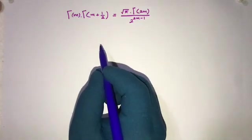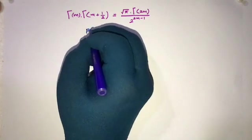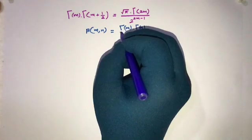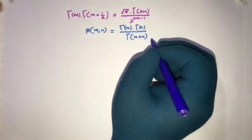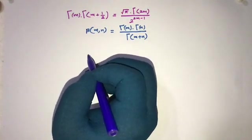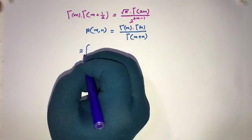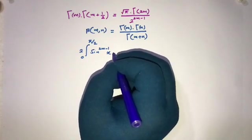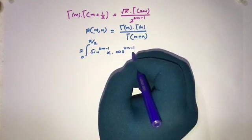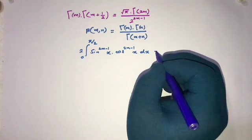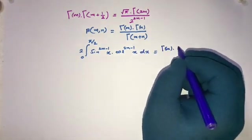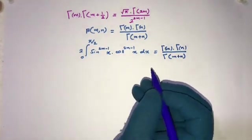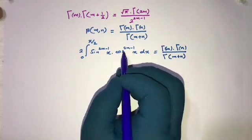First, we know the beta function: beta of m, n is equal to gamma of m times gamma of n over gamma of m plus n. We can also write the beta function using an integral: 2 times the integral from 0 to pi over 2 of sine to the power 2m minus 1 of x, times cosine to the power 2n minus 1 of x, dx, which equals gamma of m times gamma of n over gamma of m plus n.